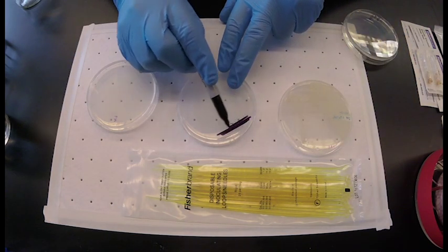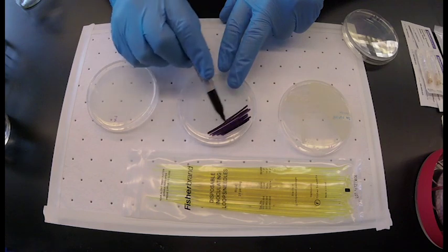The first streak contains the most bacteria and should be done in one quadrant of the plate.